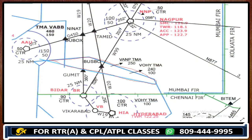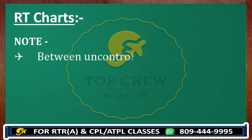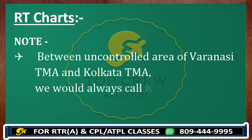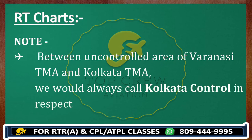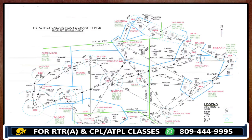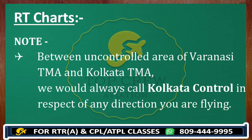This is how I cleared, and how a couple of hundred people have cleared through me. Keep it in mind and practice hard with charts. We can find both ATCs have vertical separations, as we discussed. Do remember: between the uncontrolled area, Varanasi TMA, and Kolkata TMA, we would always call Kolkata control irrespective of any direction.